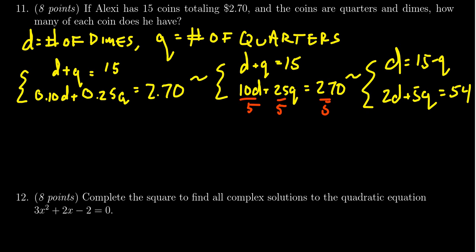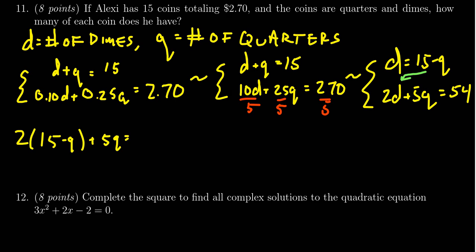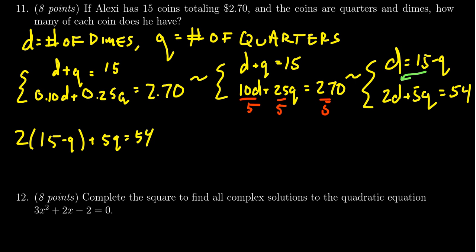Now that we already solved for d, we're going to substitute this into the second equation and solve for q in that situation. So we get 2 times 15 minus q plus the 5q. This is equal to 54, for which then we distribute the 2 in this situation. 2 times 15 is 30. We're going to get negative 2q plus 5q is equal to 54.